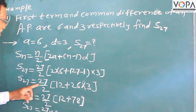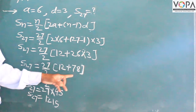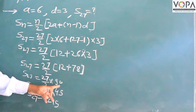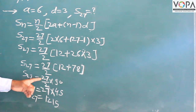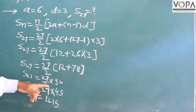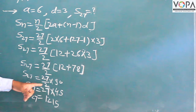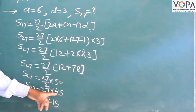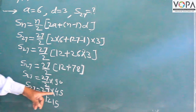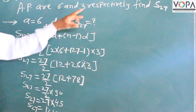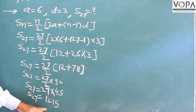This is addition: 27 upon 2 times 12 plus 78. Adding 12 plus 78: 8 plus 2 is 10, carry 1; 7 plus 1 is 8, carry 1 — giving 90. So 27 divided by 2 multiplied by 90. Then 90 divided by 2 is equal to 45. Therefore, 27 multiplied by 45 is equal to 1215. The value of S27 is 1215.